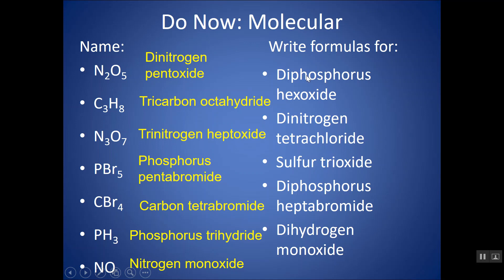Feel free to practice going in the opposite direction. Diphosphorus hexoxide is P2O6 — do not simplify unless the problem explicitly asks you to. Dinitrogen tetrachloride is N2Cl4. Sulfur trioxide is SO3. Diphosphorus heptabromide is P2Br7. And dihydrogen monoxide is just water, H2O.